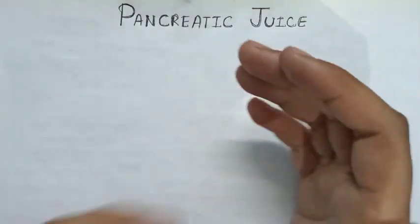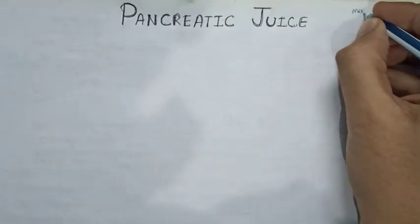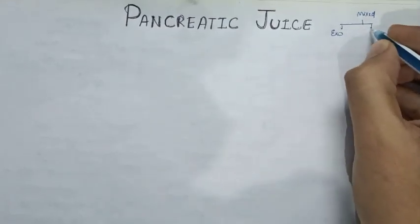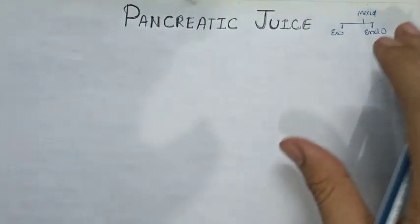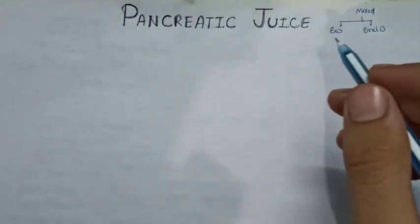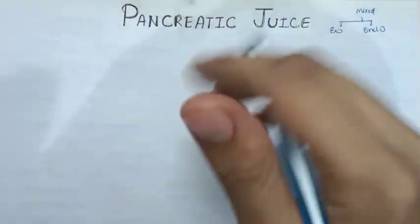Pancreatic juice is secreted by the pancreas, which is a mixed gland. A mixed gland contains both exocrine and endocrine parts. The endocrine part is concerned with hormonal synthesis and functions, while the exocrine part is concerned with the secretion of pancreatic juice.